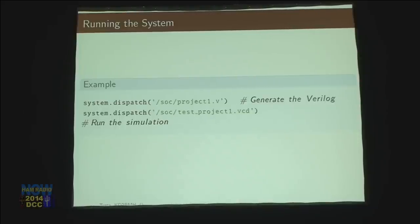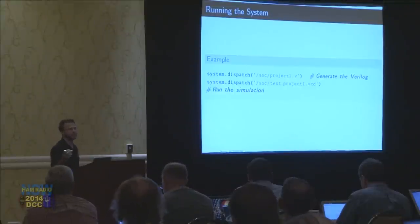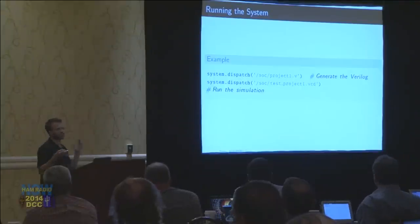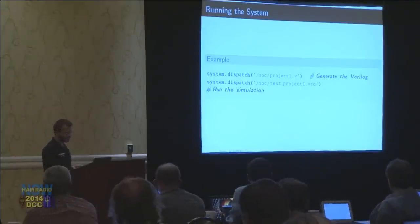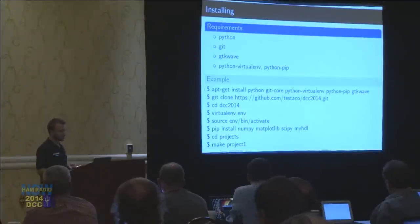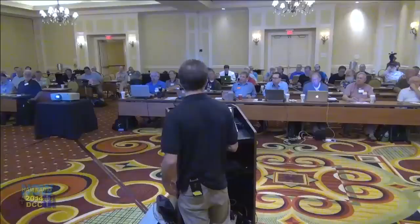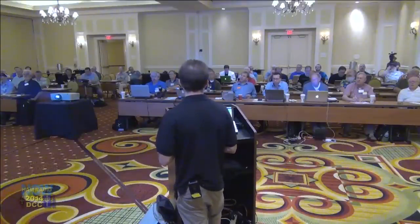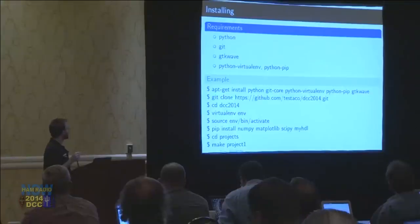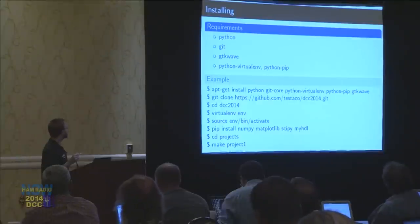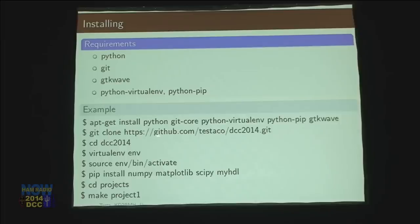For installing everything, some people have had success with the installer script I added into the code base. The general set of things to do is install Python, Git, virtual environment, and GTKWave — these are all open tools. Then this line — git clone — downloads the repository that is up on GitHub. It'll create a directory called DCC2014 that has all the source code in it.